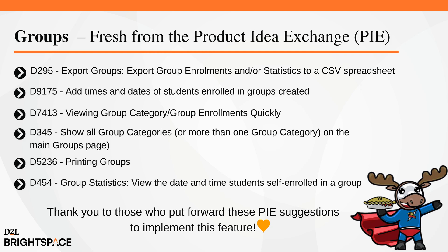This feature implements the following PI items: D295 Export Groups — export group enrollments and/or statistics to a CSV spreadsheet; D9175 — add times and dates of students enrolled in groups created; D7413 — viewing group category or group enrollments quickly; D345 — show all group categories on the main groups page; D5236 — printing groups; D454 — view the date and time students self-enrolled in a group. Thank you to those who brought forward these PI suggestions.